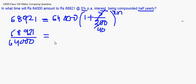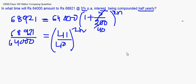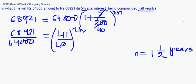So 68,921/64,000 should simplify to (41/40)²ⁿ. Try to reduce 68,921/64,000 and find the relation — it must be something to the power of 2n equated to 41/40. Solving gives n = 1½ years. In the next session we will be taking up questions and learning how to calculate rate per annum. Thank you.